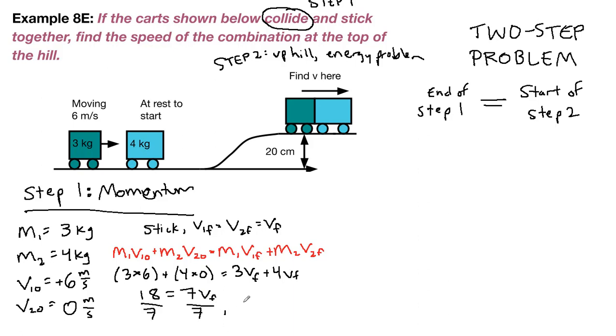And we get that our velocity at the bottom of the hill, so the end of step 1 and the start of step 2, is 2.57 meters per second. And that's at the bottom of the hill. And that becomes the start of step 2.